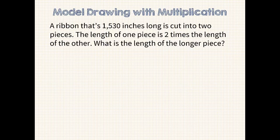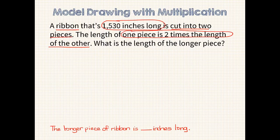The first step is to write a sentence statement. Since we have to find out the answer to the question, what is the length of the longer piece, my sentence statement will be, the longer piece of ribbon is blank inches long. Now I'm ready to identify the important information. We have a ribbon that starts out 1,530 inches long and then is cut into 2 pieces. One of the pieces is 2 times the length of the other piece.